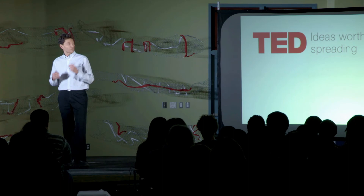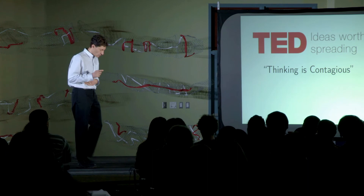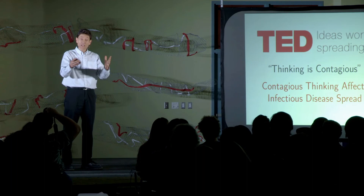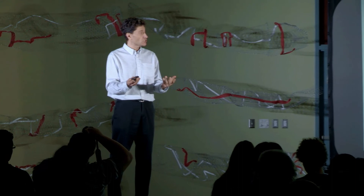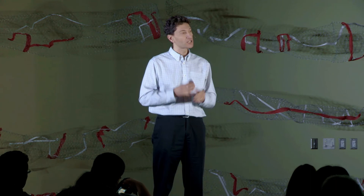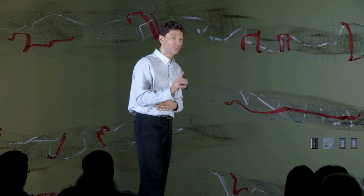The TED conferences are about spreading ideas — thinking is contagious. I want to leave you with a thought that connects this to these types of infectious disease contagion: contagious thinking actually affects the process of infectious disease spread. You make a decision of whether or not to be vaccinated, whether or not to vaccinate your children, and those decisions spread in populations — vaccine scares cause people to back off. All those things actually affect the epidemic dynamics. These are things we can put into models of infectious disease spread in order to inform public health decisions about not only how to distribute vaccine, but how to educate the public in ways that might reduce the spread of disease in the future.